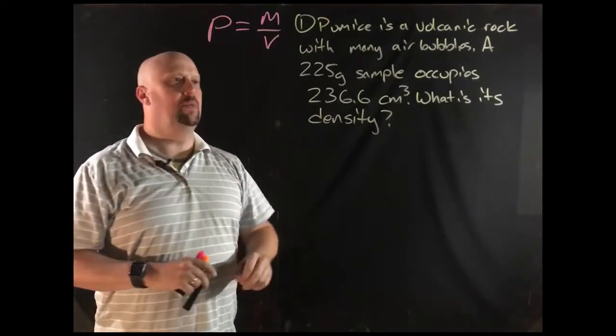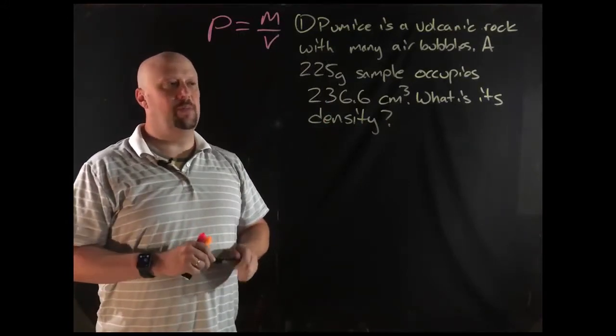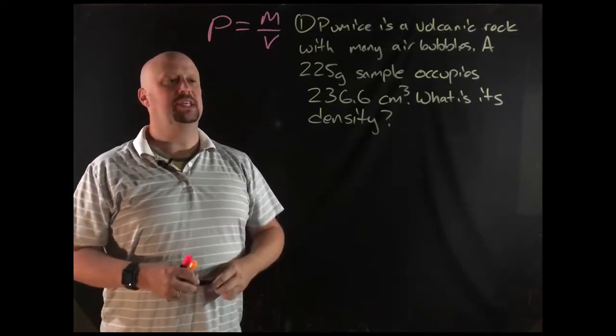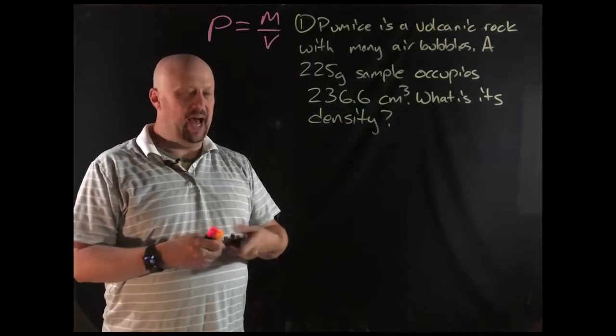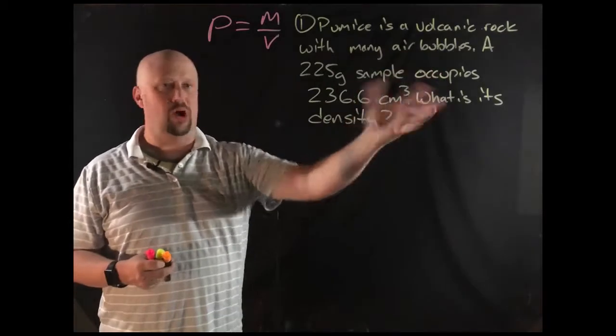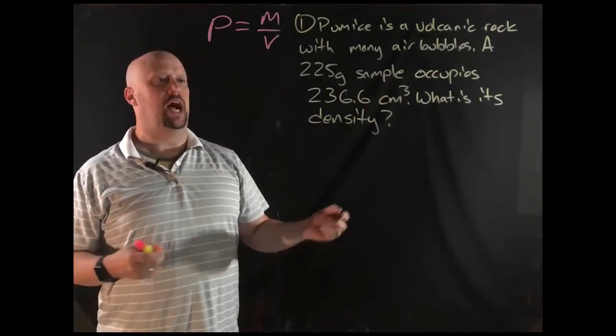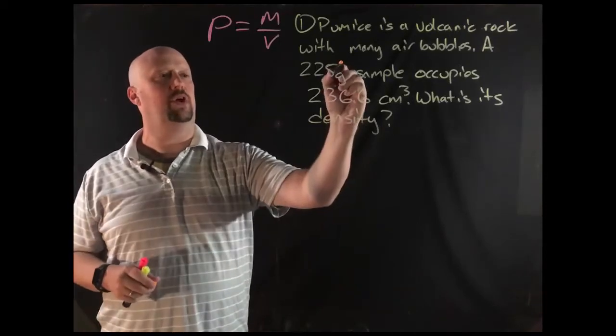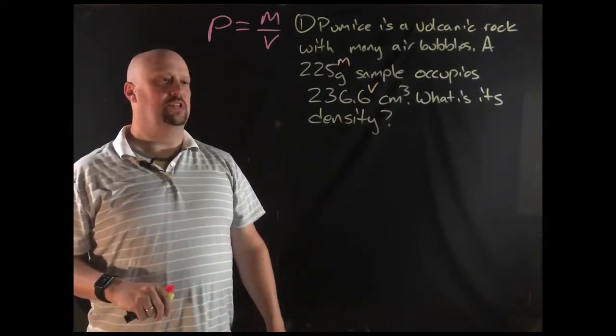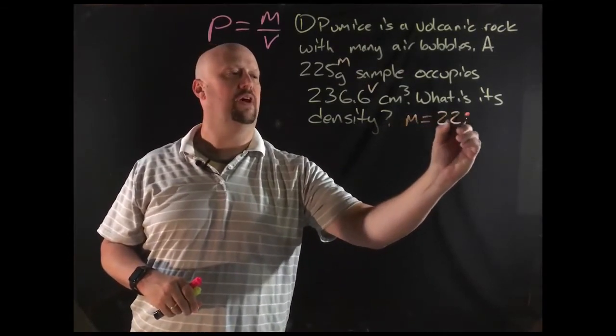Okay, so question number one, pumice is a volcanic rock with many air bubbles. A 225-gram sample occupies 236.6 cubic centimeters. What is its density? Okay, so we've got the density equation. I think there are a couple of ways that you should always work problems out when you've got word problem-type things like this, which is pretty much all you're going to get in most of chemistry. The first thing that I would do is you go through real quick and make sure you know what everything is. That's my mass. That's my volume. I certainly know that not every student is going to do this, but I think that it's really helpful if you just write everything out.